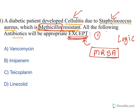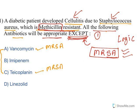The question asks: all the following antibiotics are appropriate except — so out of four, three can be used to treat MRSA but one cannot. Vancomycin is very popular and widely used to treat MRSA. Teicoplanin has a very similar spectrum to vancomycin and is also used to treat MRSA. Linezolid is also a very effective antimicrobial agent used to treat MRSA as well as vancomycin resistant Enterococci. So which one is not used to treat MRSA? It is Imipenem. The answer is B.